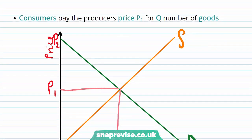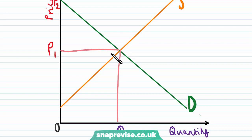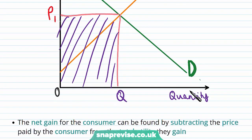So let's go a bit further. Consumers pay the producers price P1 for Q number of goods. So they pay this much for each of those goods. So that means that the total amount spent as a result of this is this area here. So that's going to be the cost for the consumer.